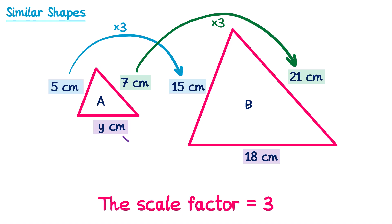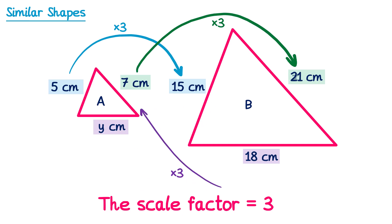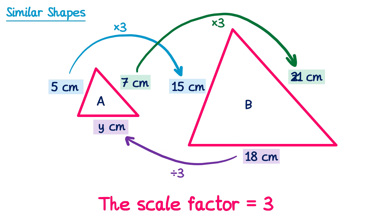Since the scale factor is 3, I could multiply Y by 3 to get to 18 — but this doesn't help me find Y; I need to go in the opposite direction. Starting at 18 and going back to Y, instead of multiplying by 3 I divide by 3. 18 divided by 3 is 6, so the answer for Y is 6cm.